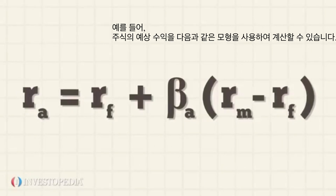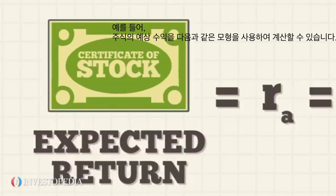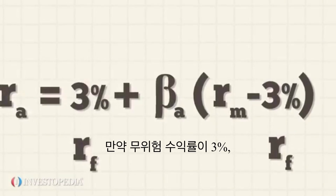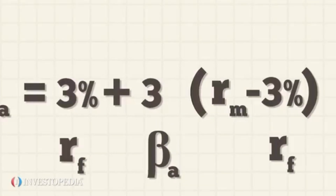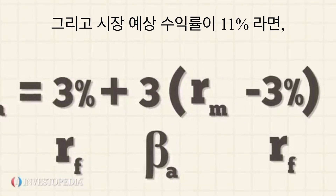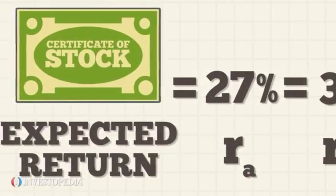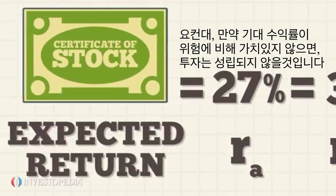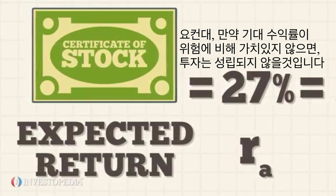For example, the expected return of a stock can be figured out using the model. If the risk-free rate is 3%, the beta, or risk measure, of the stock is 3%, and the expected market return over the period is 11%, the stock is expected to return 27%. In short, if the expected return does not make the risk worth it, the investment should not be made.